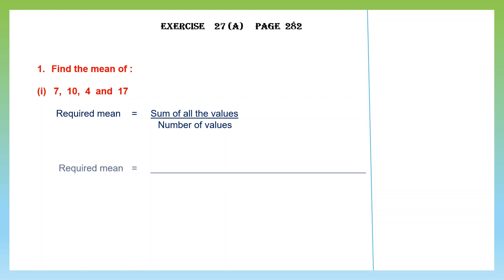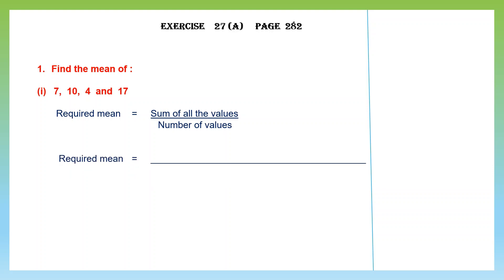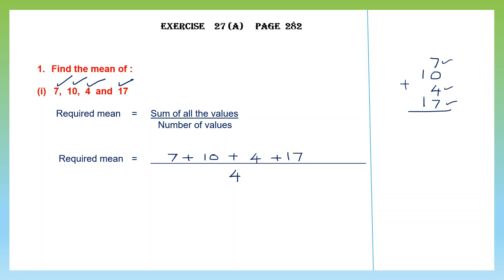Let's begin. Required mean is sum of all the values: 7 plus 10 plus 4 plus 17, divided by the number of values. How many values are there? 1, 2, 3, 4. So we divide it by 4. Let's add this up: 7 plus 10 plus 4 plus 17. 7 plus 4 is 11, 11 plus 7 is 18, carry 1 — we have 38. So here we have 38 by 4.